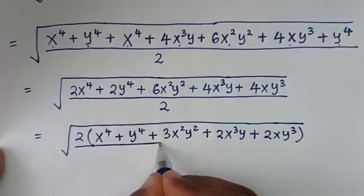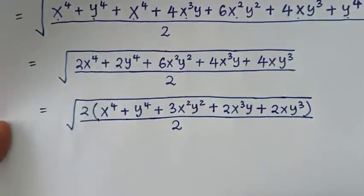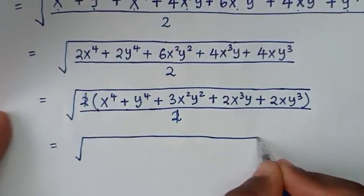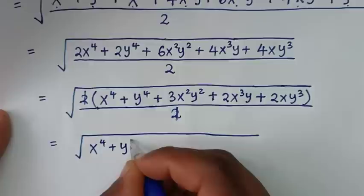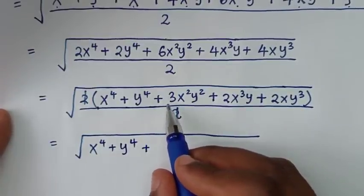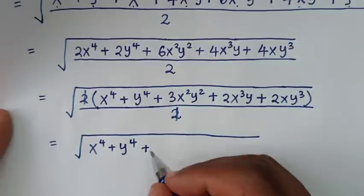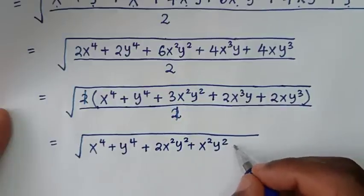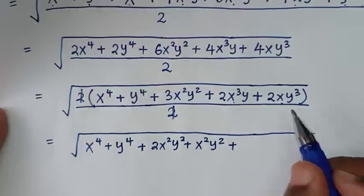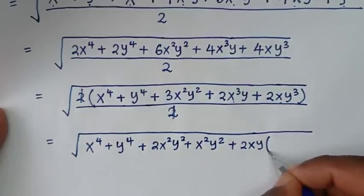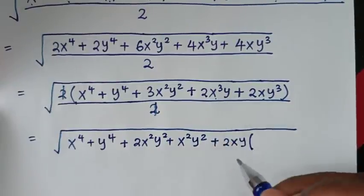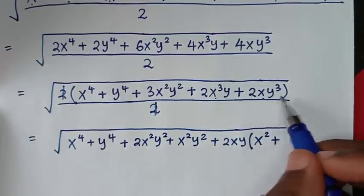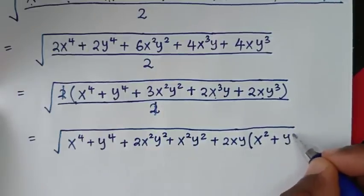In the next step, we can see that 2 is common, so we take 2 out of the bracket: 2x⁴ divided by 2 is x⁴; 2y⁴ divided by 2 is y⁴; 6x²y² divided by 2 is 3x²y²; 4x³y divided by 2 is 2x³y; 4xy³ divided by 2 is 2xy³. This 2 and the denominator 2 will cancel.